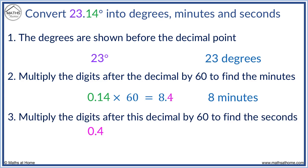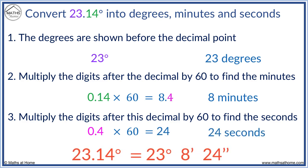0.4 times 60 equals 24. So, 23.14 degrees equals 23 degrees 8 minutes 24 seconds.